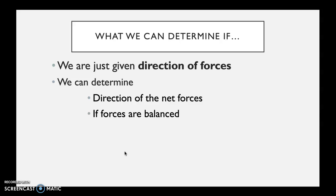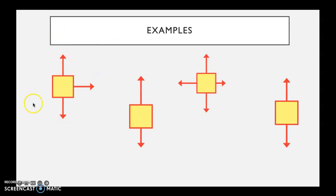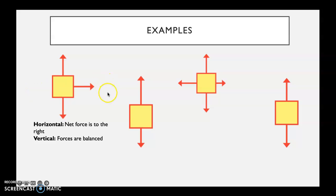If we are just given the direction of the forces — meaning we have a picture, a box, and only arrows showing direction — there are only two things we can determine: the direction of the net forces, and whether or not those forces are balanced. For example, with this first diagram, the horizontal forces have a net force to the right, and the vertical forces are balanced, so their net force is going to be zero.